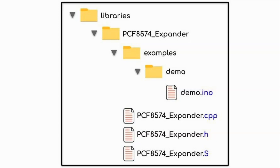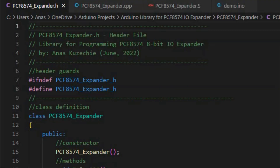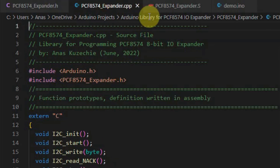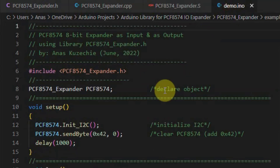Now we look at creating a library for the PCF8574 IO expander. This diagram shows the directory structure of the library. Within the Arduino's libraries folder, we have the library folder named PCF8574_expander, which contains the examples folder and the files needed to create the library: the source file, the header file, and the S file containing the assembly code. We use Microsoft Visual Studio Code to create the header file, the source file, the S file, and the example sketch.